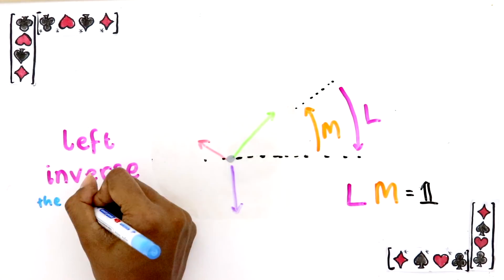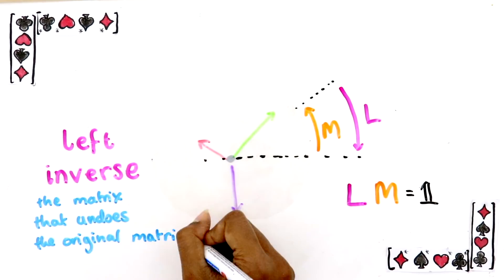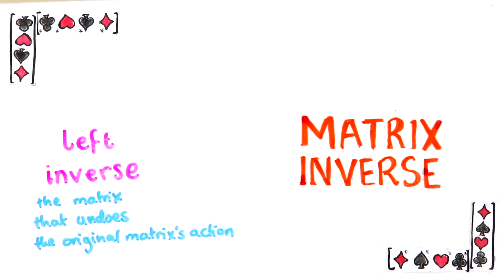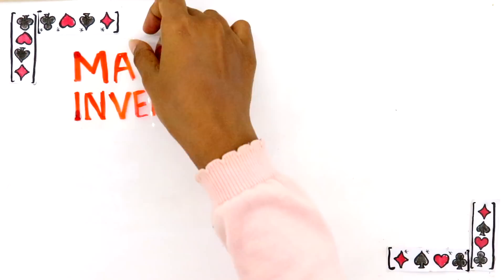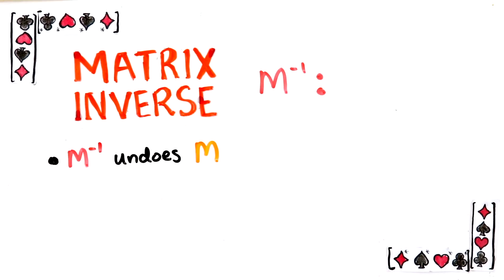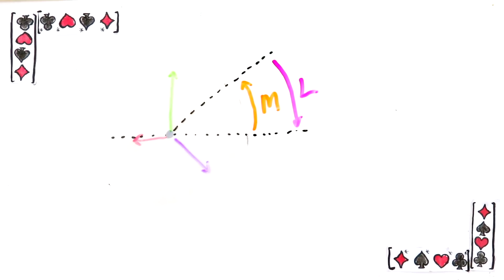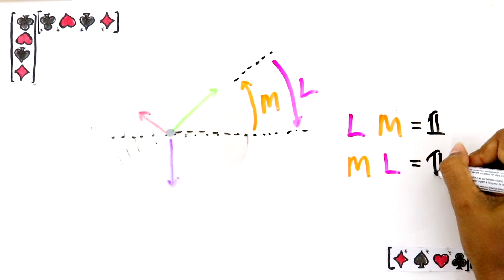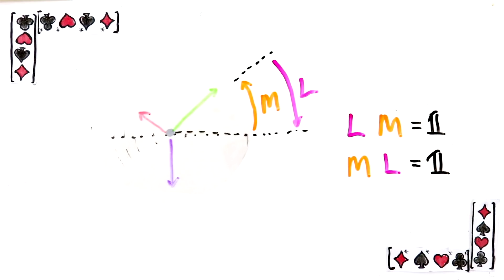So now we know the left inverse is a matrix that undoes the original matrix's action. The annoying thing about inverses is really their name. It sounds like the inverse should be the thing that undoes a matrix. Instead, the definition of M inverse is M inverse undoes M and M undoes M inverse. Going back to our example, if you do M first and then L, that's the identity. But it's also true that if you did L first, then M, you'd also get the identity. So since L undoes M and is undone by M, L and M are inverses of each other.